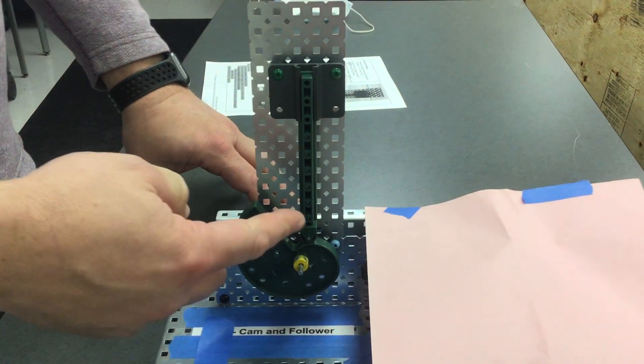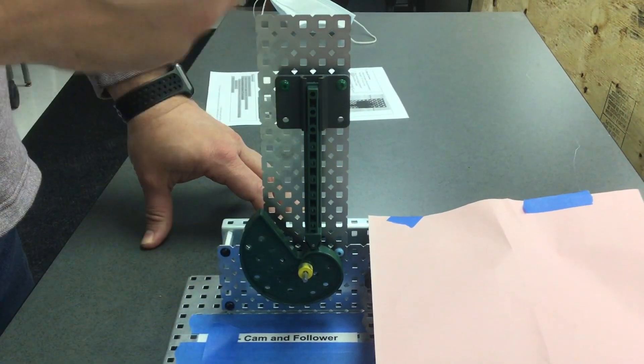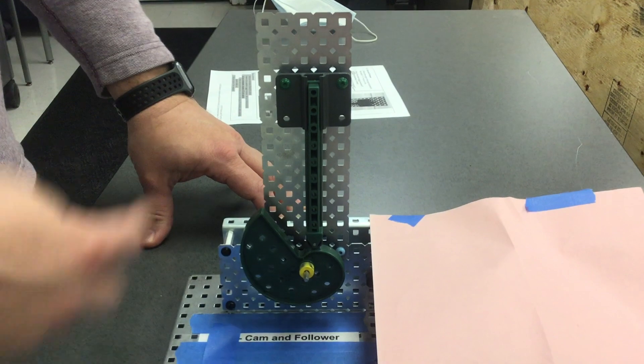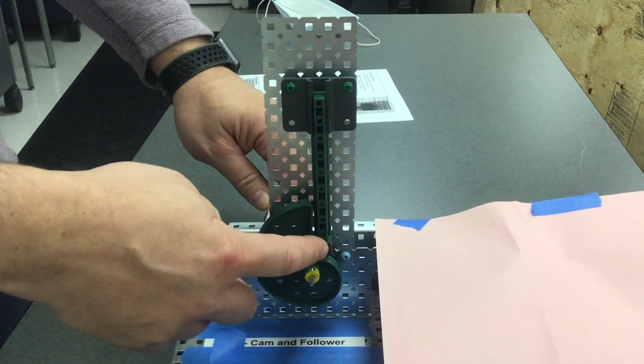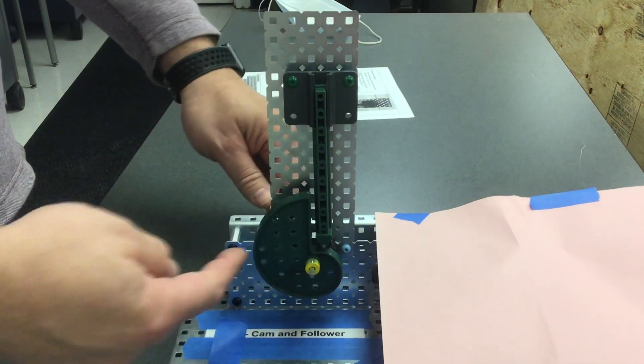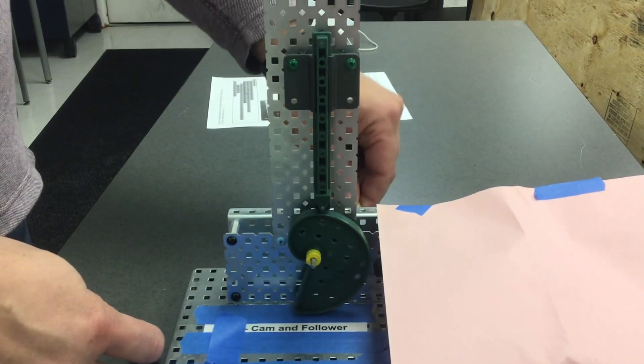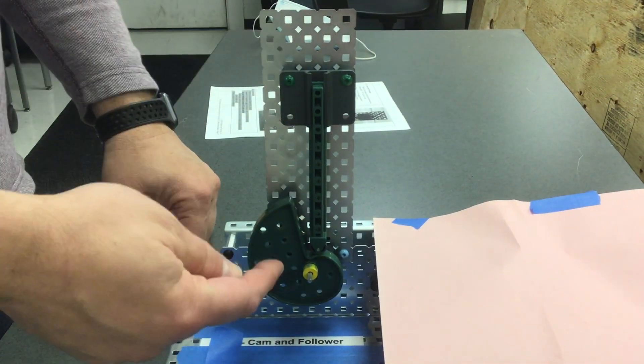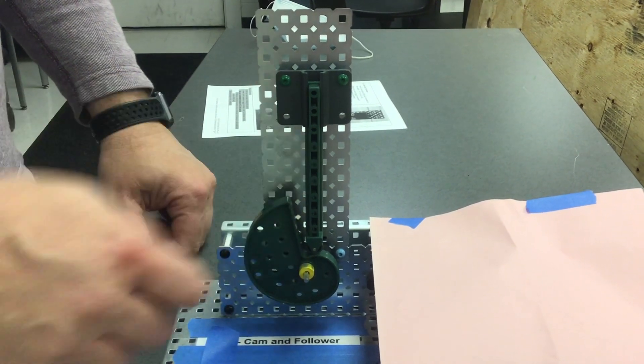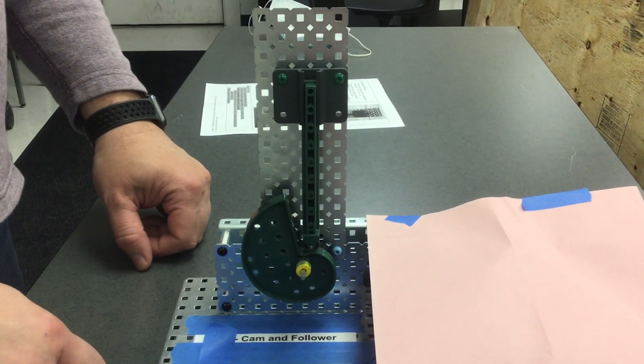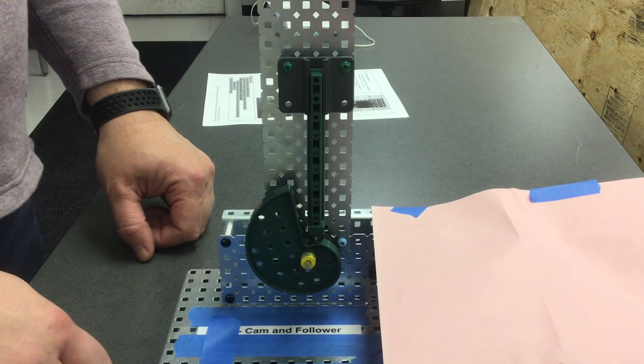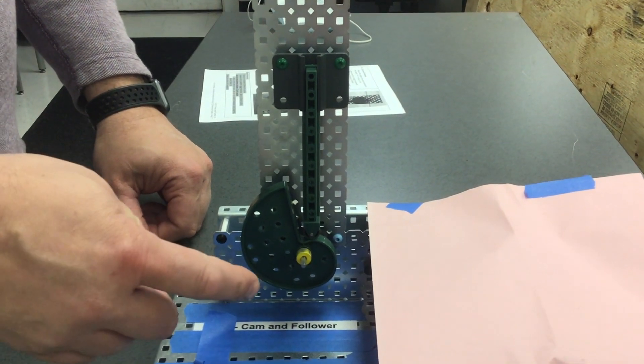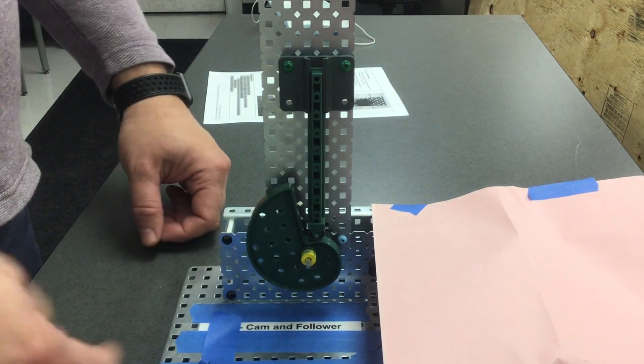Now let's talk about how many times this follower goes up and then back down per rotation. I'm going to start with it flat right here. Let's count. One full rotation. The follower goes up and then down once. It's one to one. The follower will move up and down one time with one revolution of the crank.